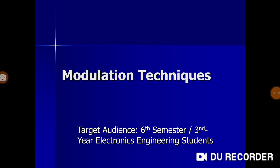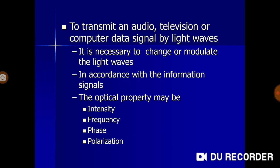For the second session, we start with the modulation techniques as applicable to optical transmitters. To transmit audio, television, or computer data signals by light waves, it is necessary to change or modulate the light waves in accordance with the information signals. The optical properties that may be used include intensity, frequency, phase, and polarization, to name a few.